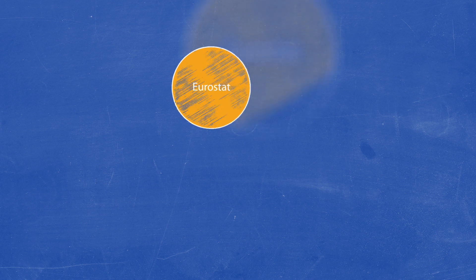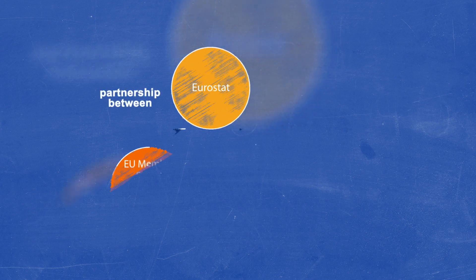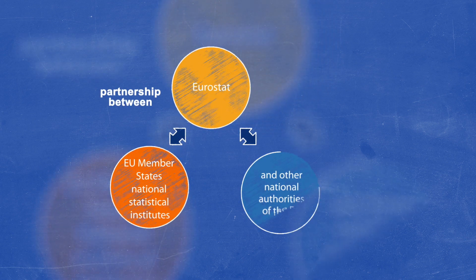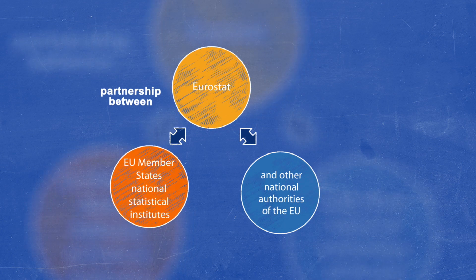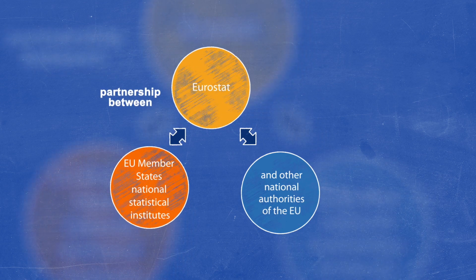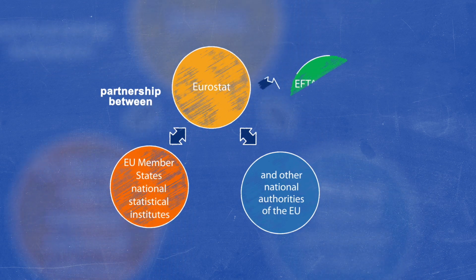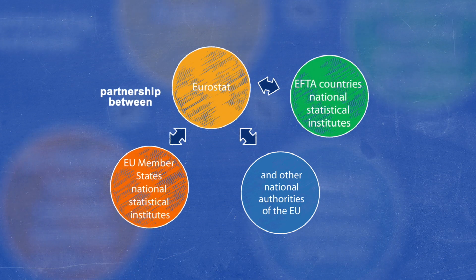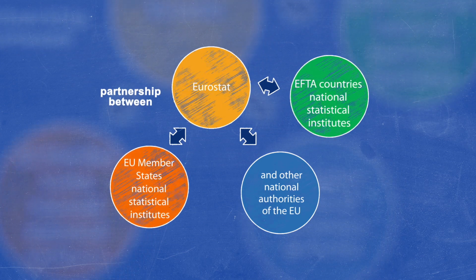So how does Eurostat get its statistics? National statistical offices collect the statistics, then Eurostat compiles these figures to produce European totals or averages, allowing it to publish comparable data.